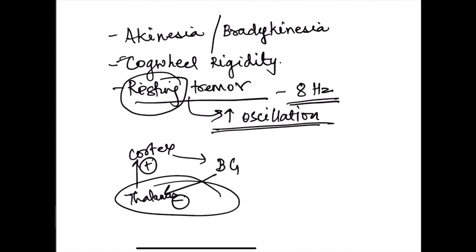Cogwheel rigidity is detected when testing muscle tone by passive movement of the limbs. The tone is interrupted in between — it gives way in jerks, like a cogwheel. This occurs because of the differential effect of basal ganglia on agonist and antagonist muscle action.